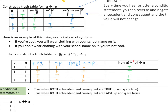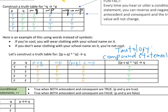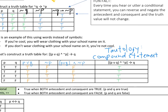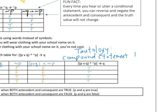Look at the last column — everything is true. Do you remember what that is called? That is called a tautology. We talked about this in the last video. A tautology is a compound statement that is always true.